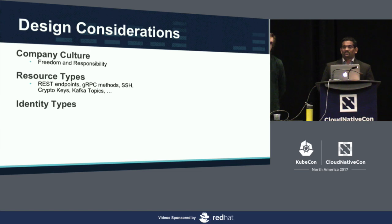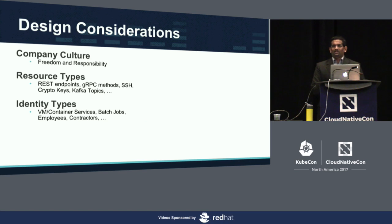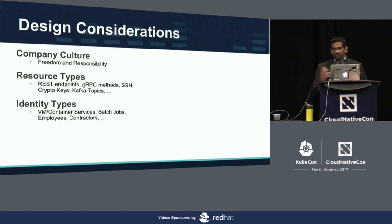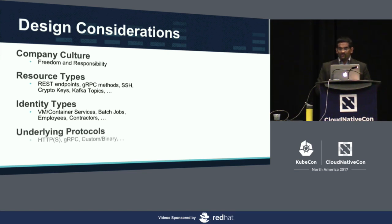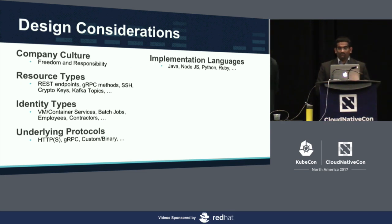Identities — a lot of authorization systems you see around are mostly RBAC and are either LDAP-based or AD-based. The problem is those systems are mostly designed for users. But here, incoming identities can be users — full-time employees or contractors — and also software like batch jobs running in containers or VMs running services. All these callers need to be identified and supported. Underlying protocols — it could be HTTP, gRPC, or completely custom binary protocols. Implementation languages — people are free to use whatever language they prefer: Java, Scala, Node, Ruby, Python, Rust.